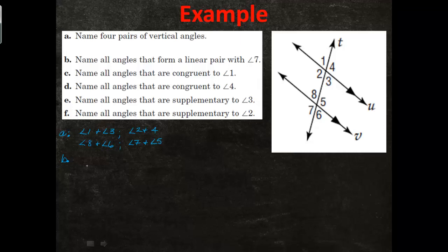Part B says name all angles that form a linear pair with angle seven. There are going to be two of those. The linear pairs are: angle seven and angle six, and angle seven and angle eight.